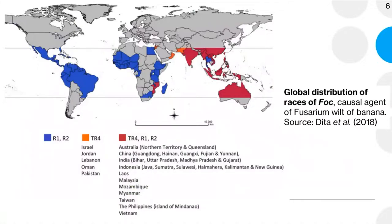The disease can spread across the country if there is no good plant quarantine. This picture shows the distribution of FOC. Race 1 is the predominant race devastating banana worldwide, shown in blue and red on the map. Race 4, or Tropical Race 4, is shown in red only. Without strong plant quarantine, it is likely that Race 4 will predominate soon.